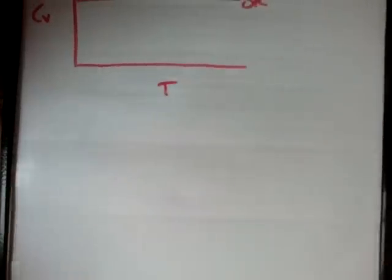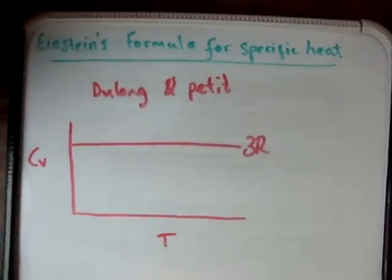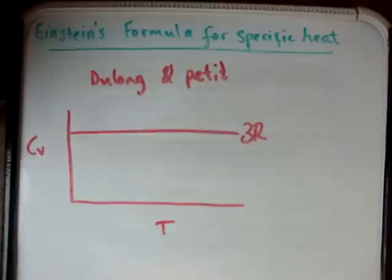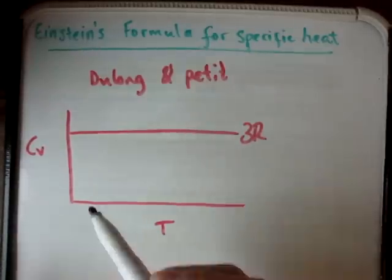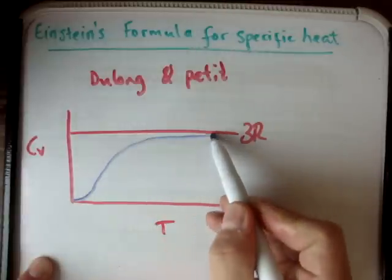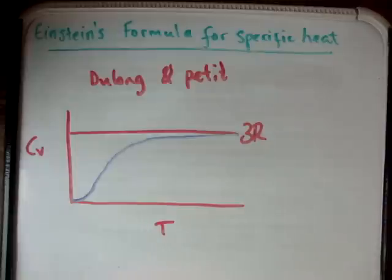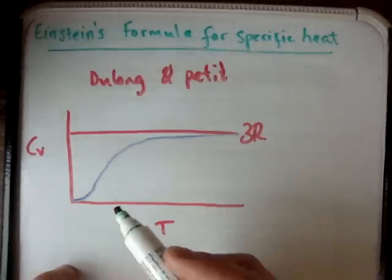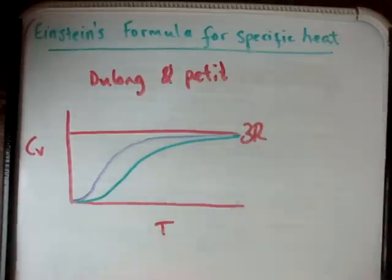So that's what was experimentally known at the time of Einstein — the Law of Dulong and Petit. However, when the temperature was not sufficiently high, you had curves looking something like this. That might be a heavy solid, so you might have a low frequency, and for light solids, you might have a curve looking like this.